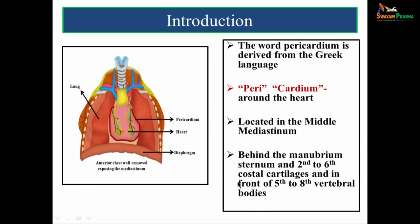Please concentrate on the picture on your left side. Here the anterior chest wall has been removed exposing the mediastinum. You can see the heart which is being surrounded by a covering called the pericardium. On either side you see the lung, this is the diaphragm, here you see the trachea, and these are the great blood vessels.